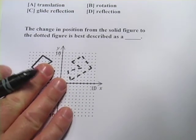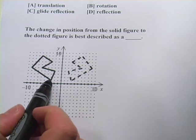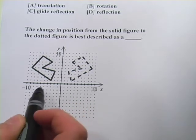Let's look at the next one. This one says the change in position from the solid figure to the dotted figure is best described as a what.